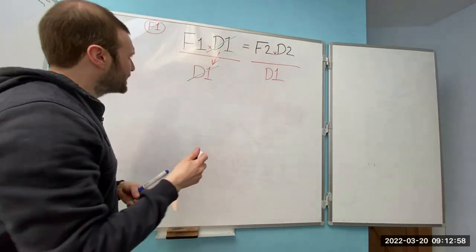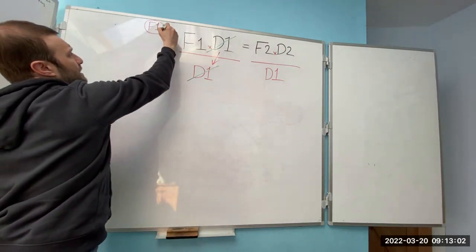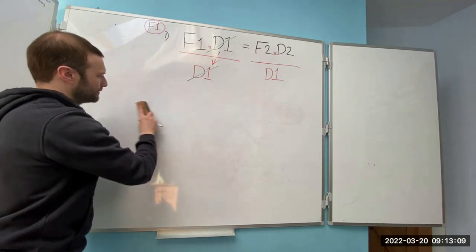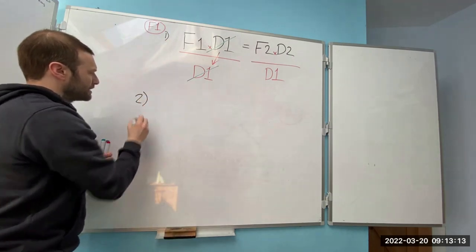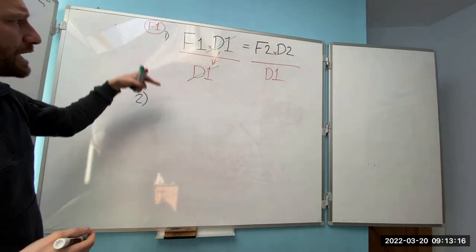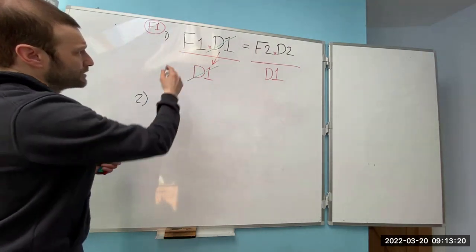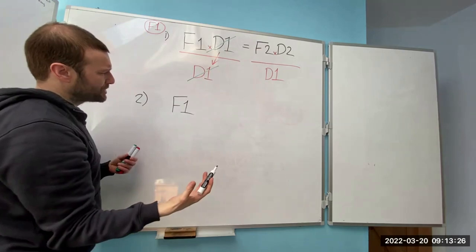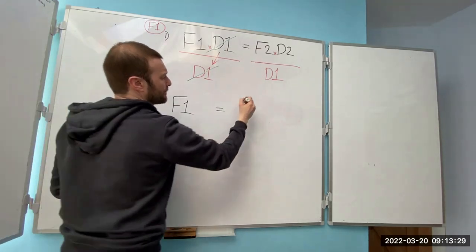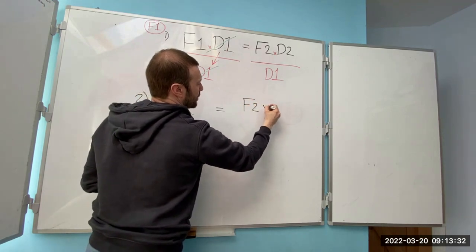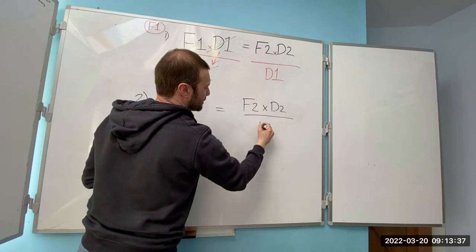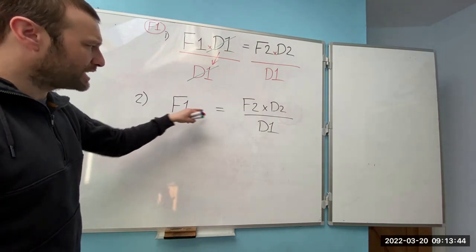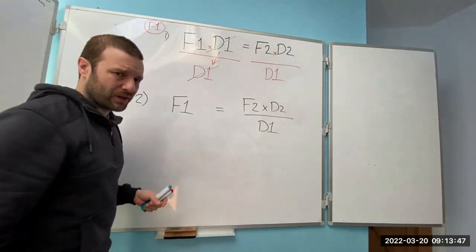The second thing I want you to do is to put the steps in order — Step 1, Step 2. On Step 2, all I want you to do is clean up that formula so you can see what you've got. So we've got F1. D1 and D1 cancel each other out, and then I write that formula out: F2 times D2 divided by D1. I've got F1 by itself on one side of the equal sign — that is the formula transposed.